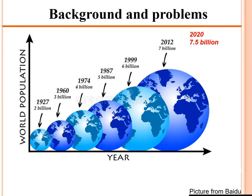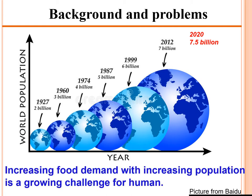In the background and problems section: in 1927 there were 2 billion people on Earth, while now in 2020 the world population has increased to 7.5 billion people. However, the total land area of the Earth did not increase during this period. Increasing food demand with increasing population is a growing challenge for all of humanity.